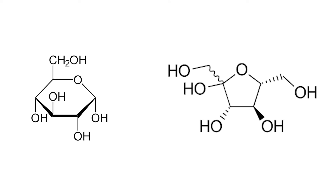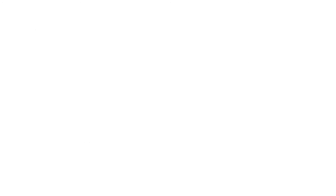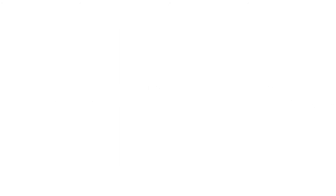Well, in fact, it does make sense. Because there are many different types of chemicals just like glucose and fructose, which have the same chemical formula but have a different structure. These are called structural isomers.